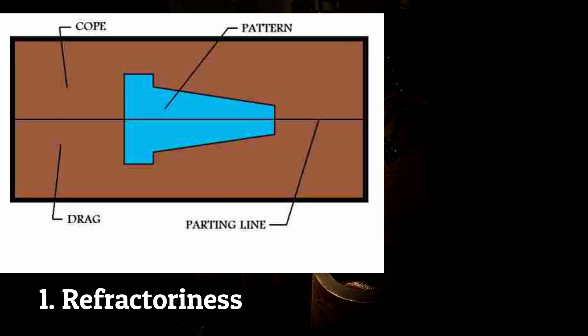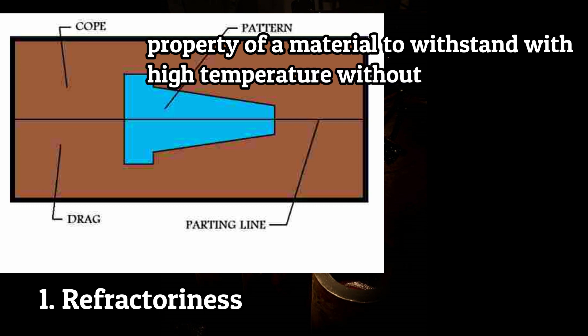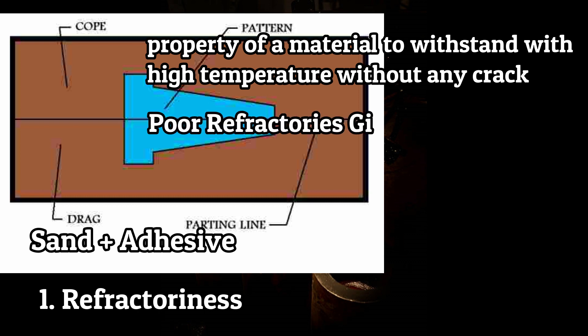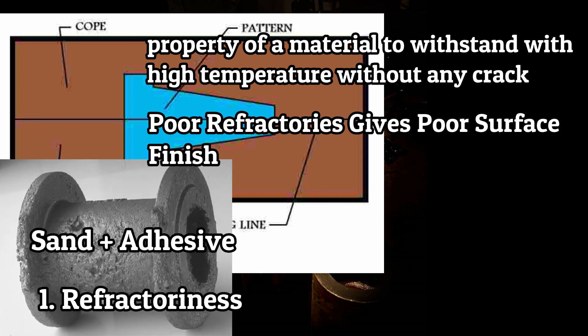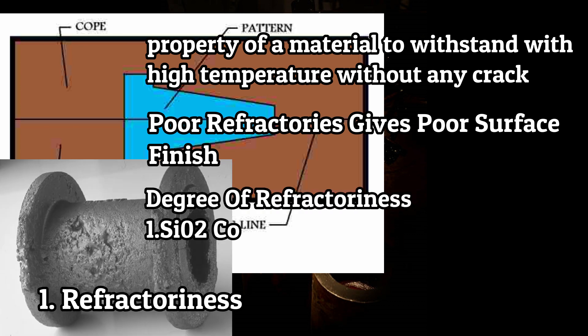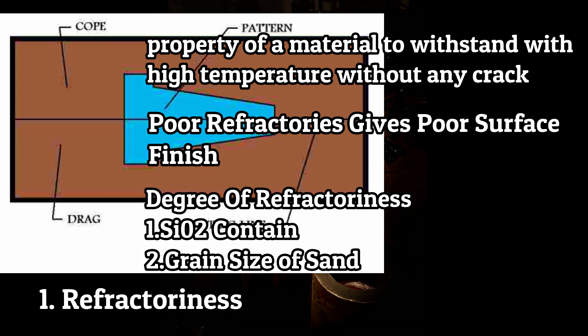Refractoriness is the basic and most desirable property of molding material. It is defined as the property of a material to withstand high temperatures without any cracking or breaking of the mold, which can provide good casting. This property of sand can be extended to some extent by mixing some adhesive. Poor refractoriness gives poor surface finish and poor casting. The degree of refractoriness depends on the silicon oxide content and grain size of the sand. Higher silicon oxide content gives higher refractoriness.